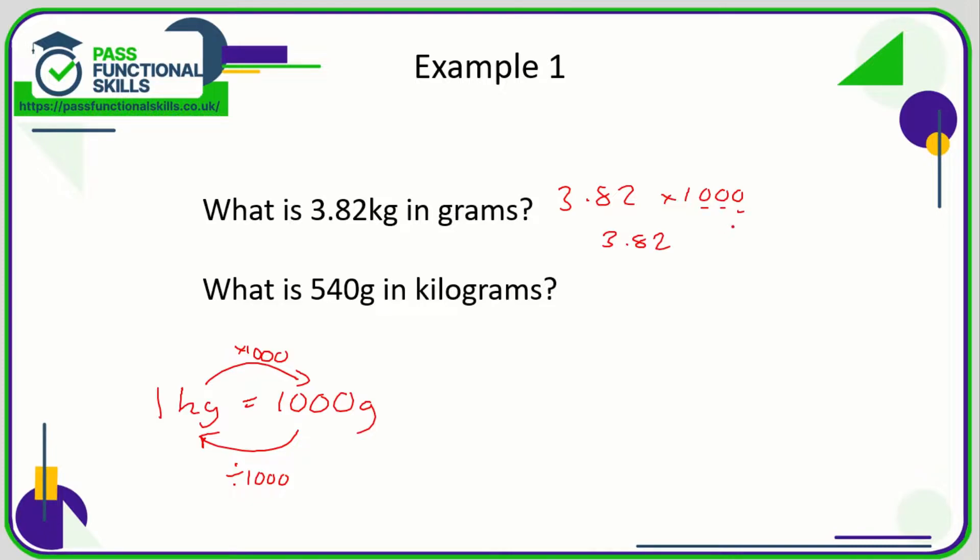Because we're multiplying by a thousand, we are going to be moving the decimal point three positions to the right. I'm going to stick some zeros on the end so it's easy for me to move the decimal point one, two, three places.